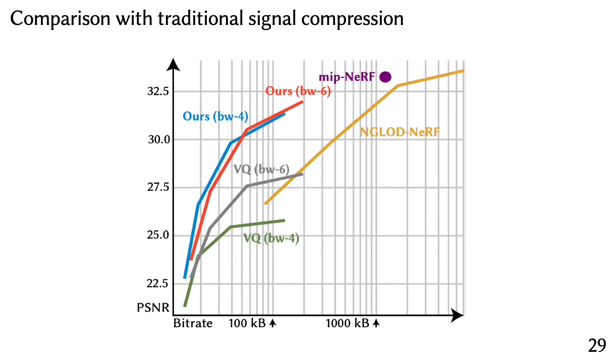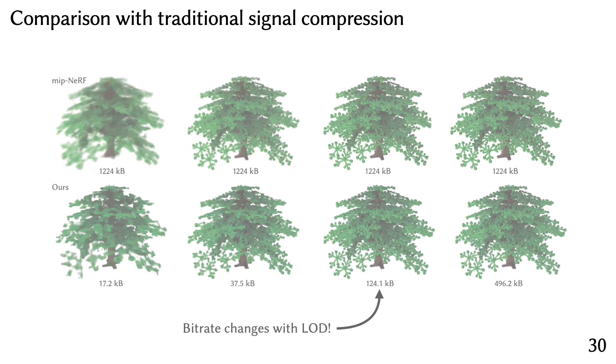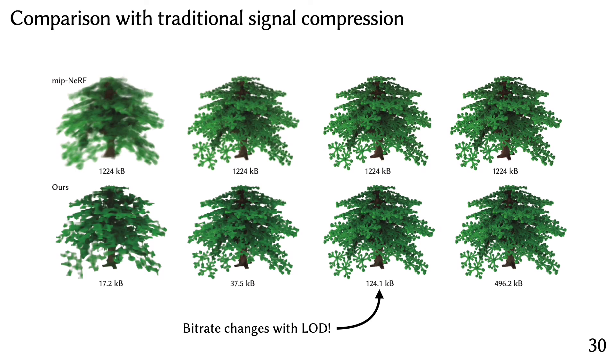Here are the bitrate distortion curves that showcase the tradeoffs between size in the x-axis and the quality in the y-axis. We see that we are able to shift the tradeoff curve as desired. We also enable progressive streaming level of detail, which allows the bitrate of the representation to change as we change the LOD. This is useful in applications like streaming.